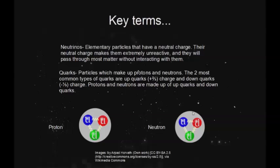Protons and neutrons are made up of up quarks and down quarks. For example, you can see here that protons are made up of two up quarks and one down quark. If you add the charges together — plus two-thirds, plus two-thirds, minus one-third — you get one. That is why a proton has a plus one charge.